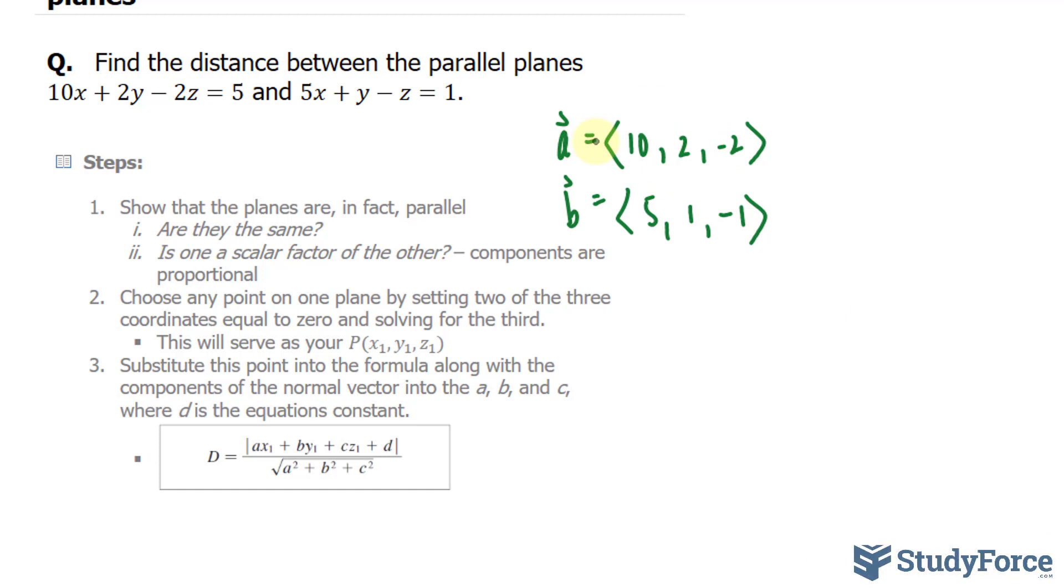In step number two, we have to find a point on one of the planes. And we can do that by setting two of the three coordinates equal to 0. For example, we'll take this equation. I'll set y and z equal to 0. And I'll end up with 10x is equal to 5.